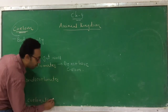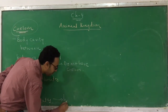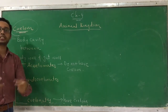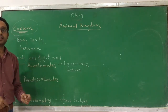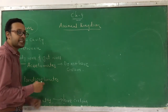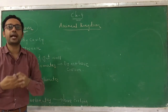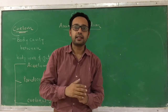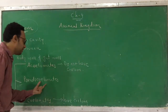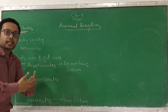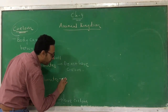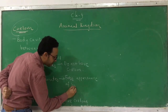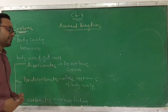Coelomates possess coelom — in this category of animals, a body cavity can be found. Pseudocoelomate — pseudo means false — they don't really have a body cavity, but there is something which appears like a body cavity; it gives a false appearance of body cavity. Like when you are going through a road in a desert area, you might see water on the road but really there is none — such a false feeling occurs. Similarly, pseudocoelomates don't really have a body cavity, but it appears like they do.